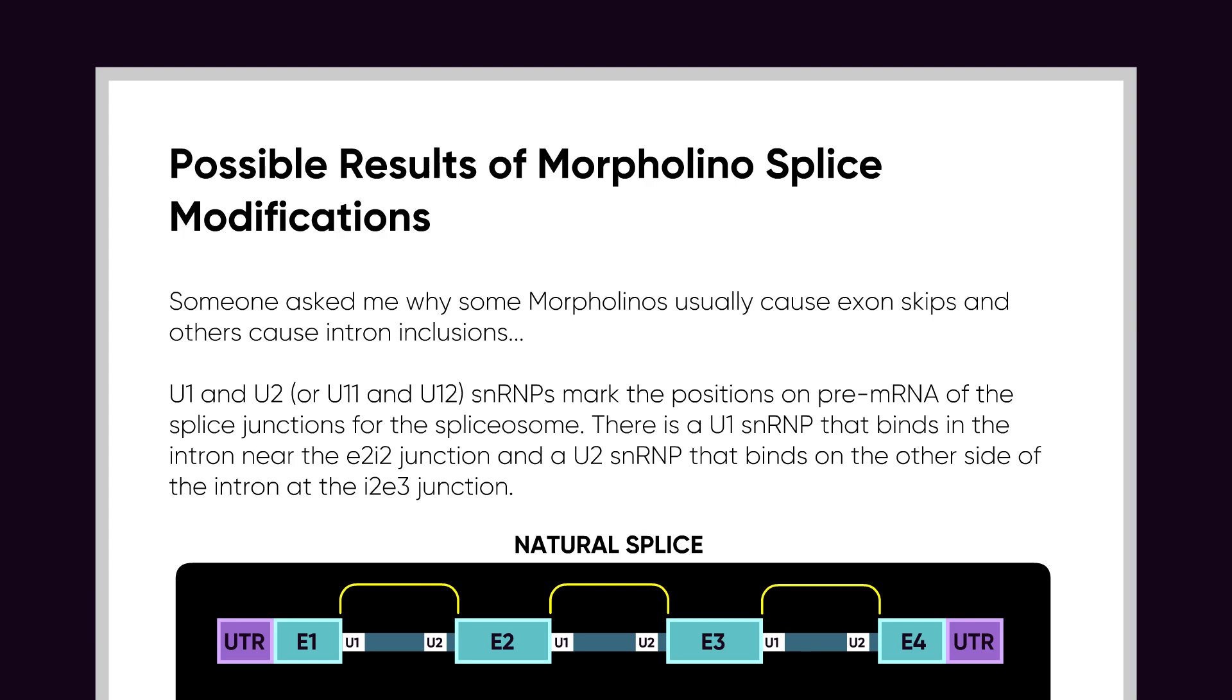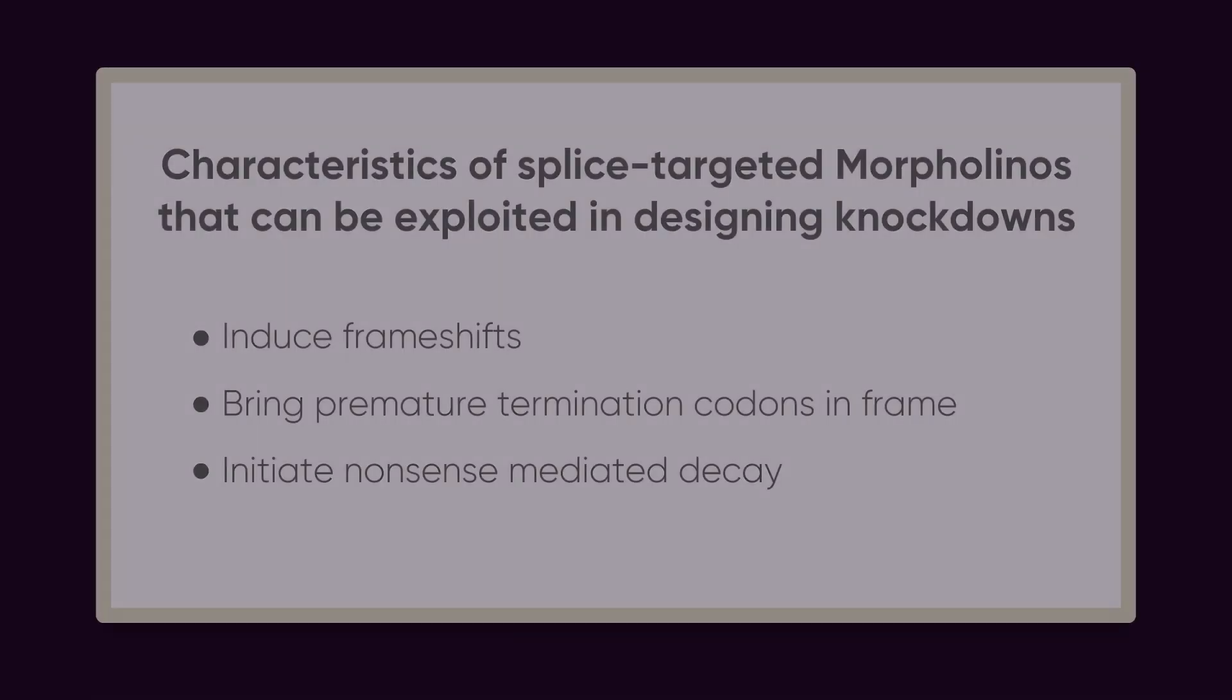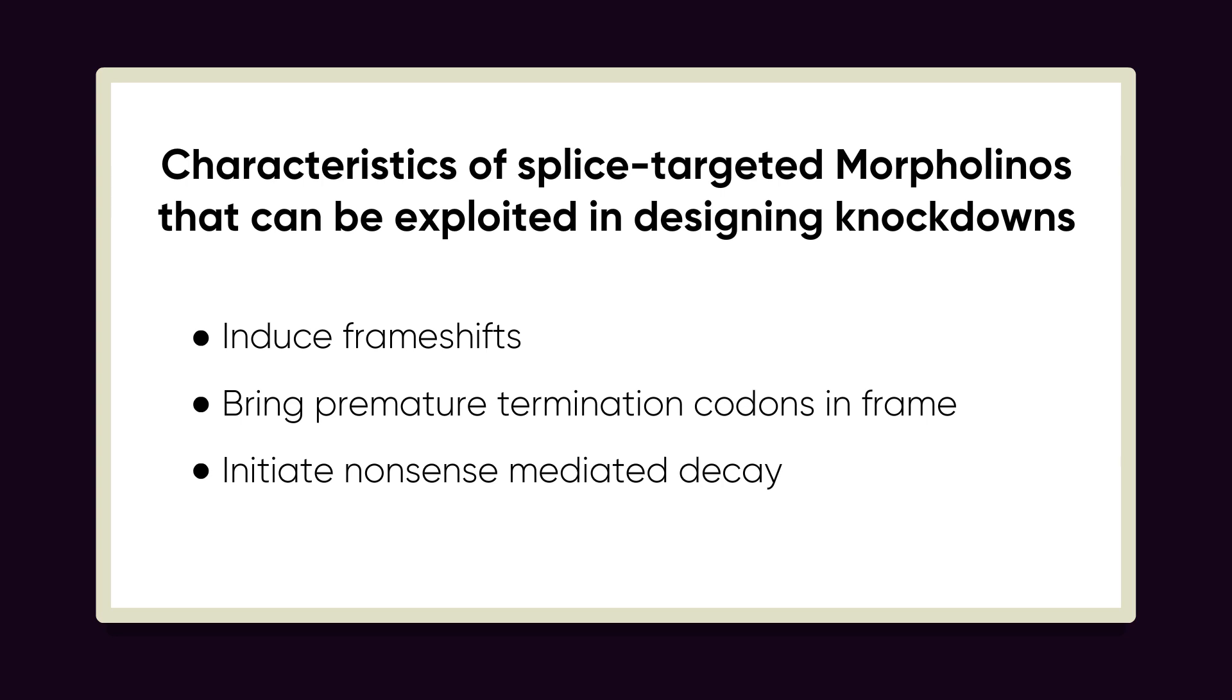Important consequences arising from splice modifications include induced frameshifts, bringing premature termination codons in frame, and nonsense-mediated decay. We won't discuss details of these outcomes in this video, but they're important to understand for designing splice-modifying experiments and interpreting the results, both at the protein level and for studying gels from reverse transcriptase PCR.